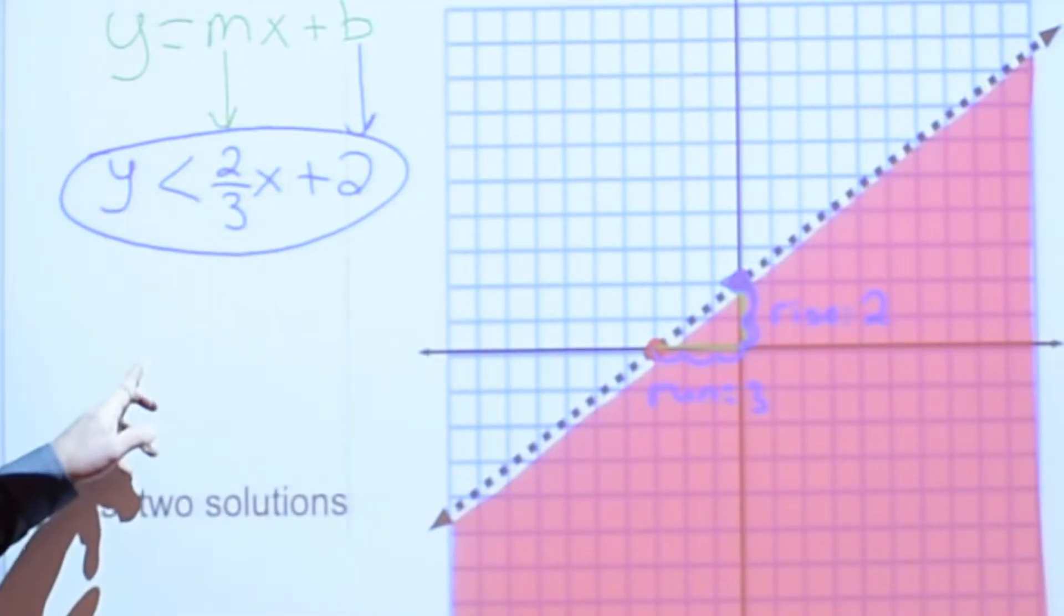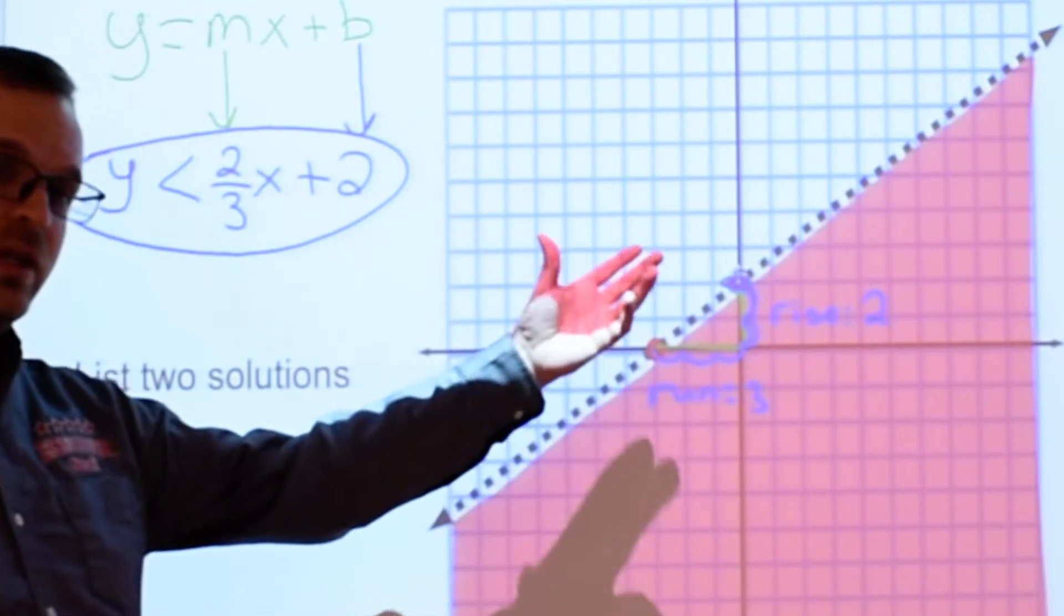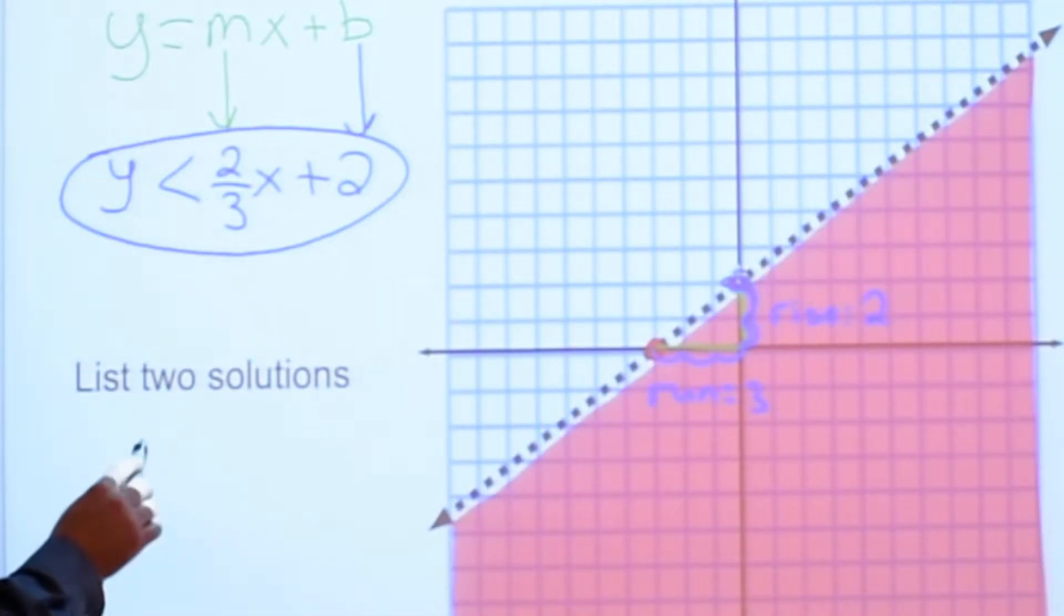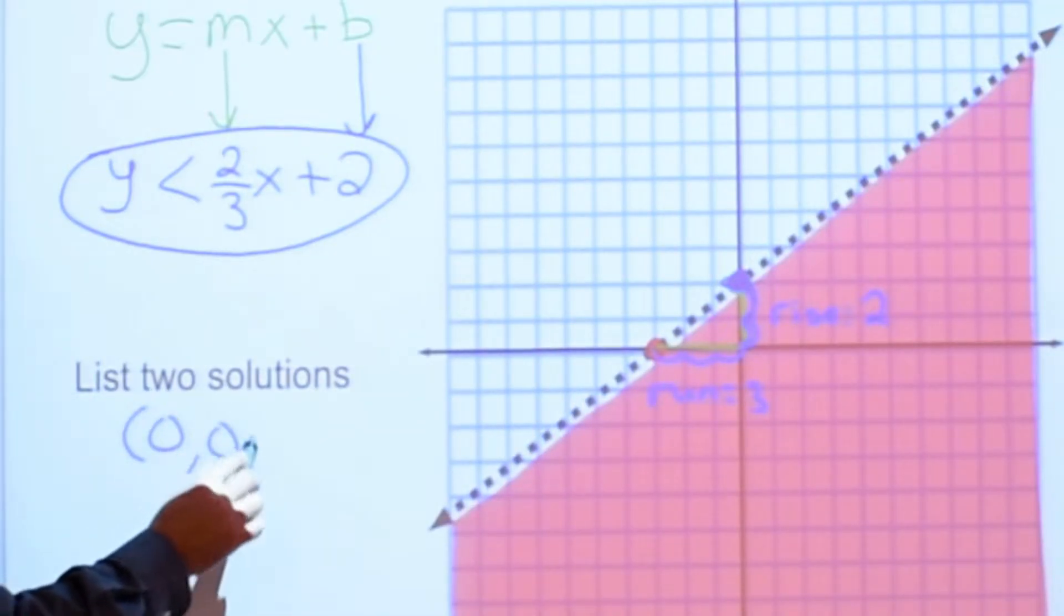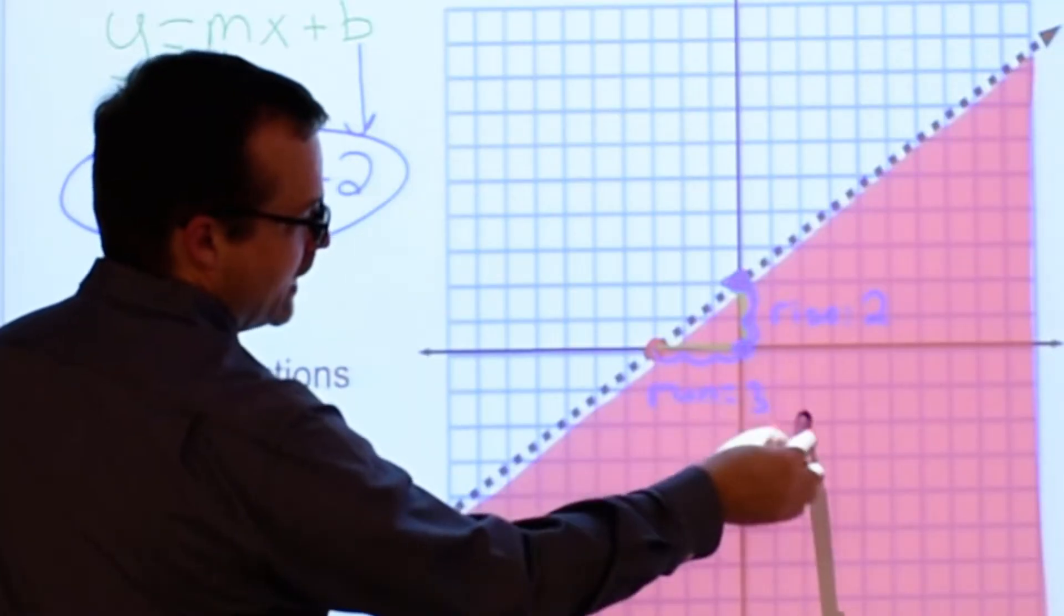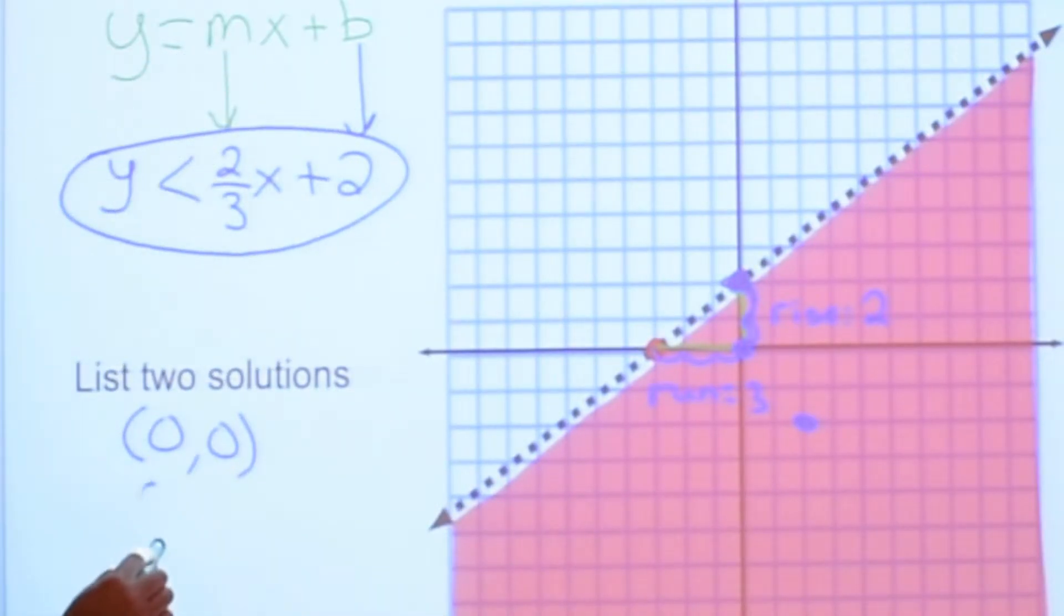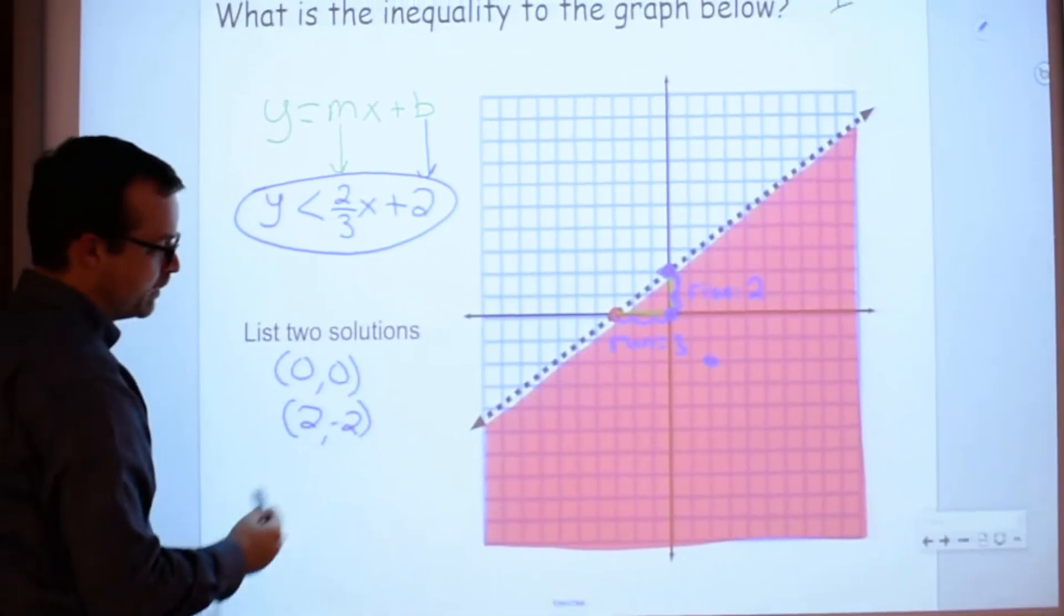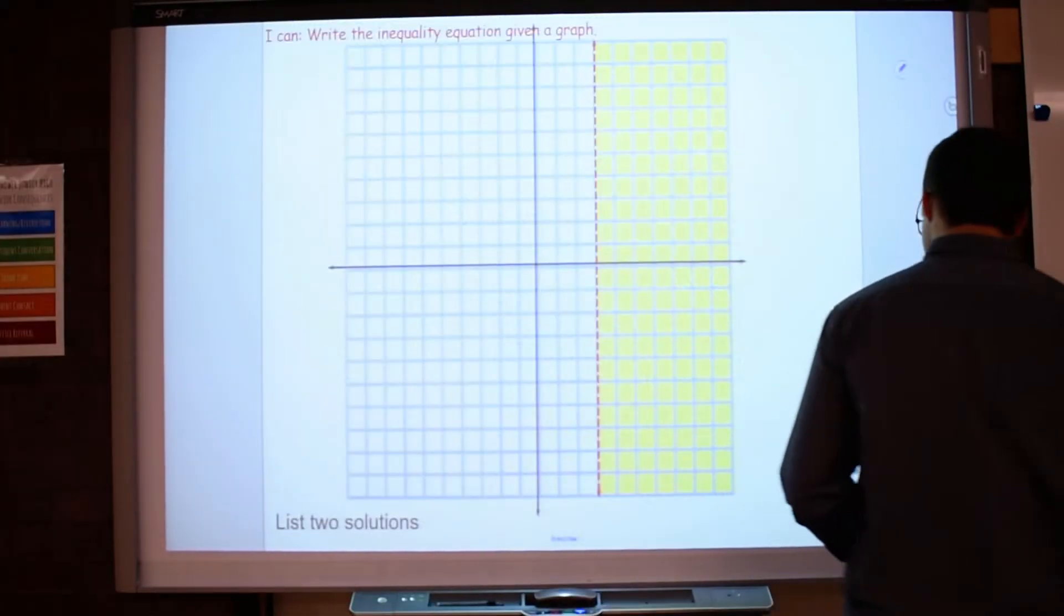And it would be really easy to list two solutions here. I just look in the shaded region and name two ordered pairs from that. I could go with the origin at 0, 0. That's in the shaded region. I could also go with 2, negative 2 as a solution there.